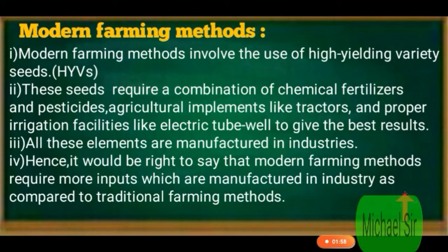यह सत्य है कि modern farming method को अधिक inputs की जरूरत होती है जो industry में बनाई जाती हैं, लेकिन traditional farming method में industry में manufacture की गई चीज़ों की जरूरत नहीं पड़ती। Thank you very much for listening.